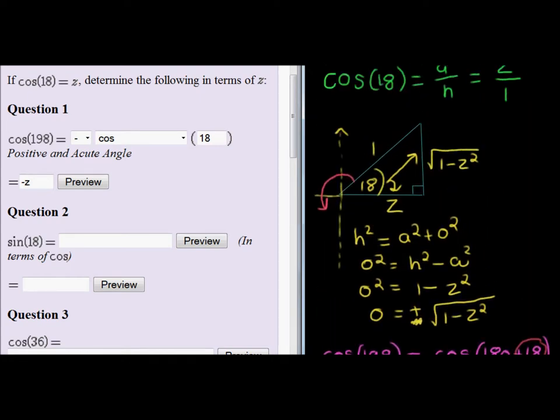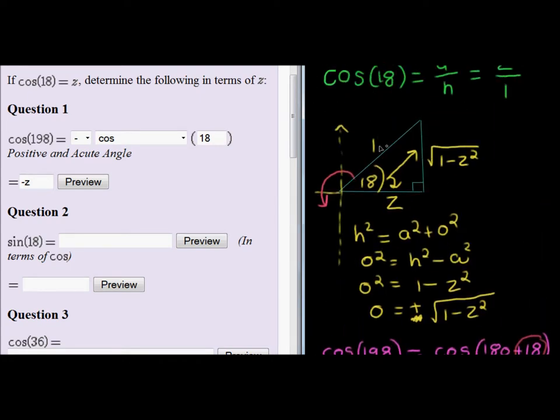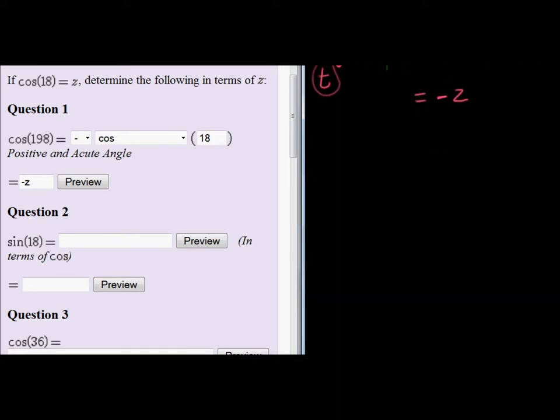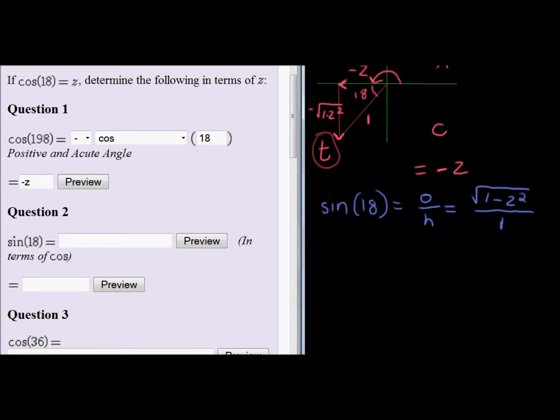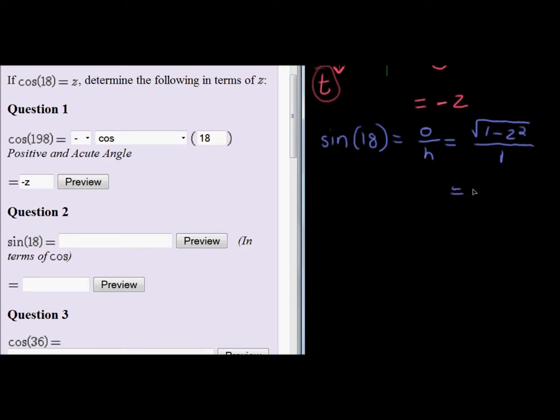Now you remember from our previous question that we already have a triangle and sine of 18 can simply be written as opposite over hypotenuse. And we calculated our opposite to be square root of 1 minus z squared over our hypotenuse of 1. And that will give me just an answer of square root of 1 minus z squared. That's one way of doing it.